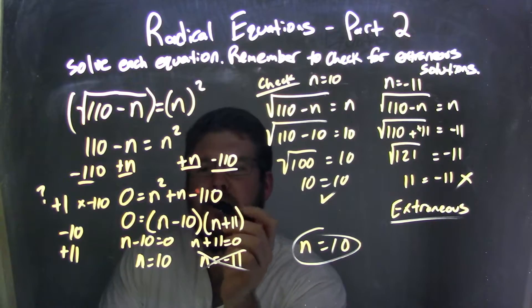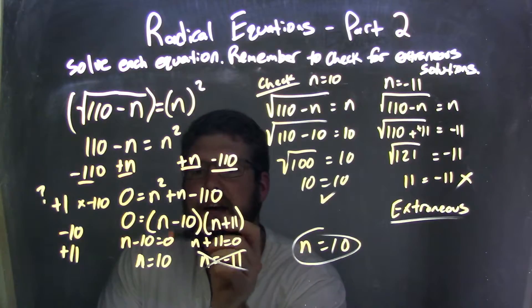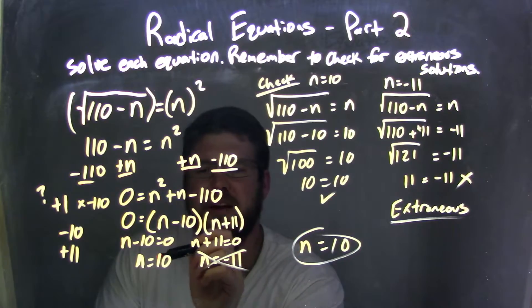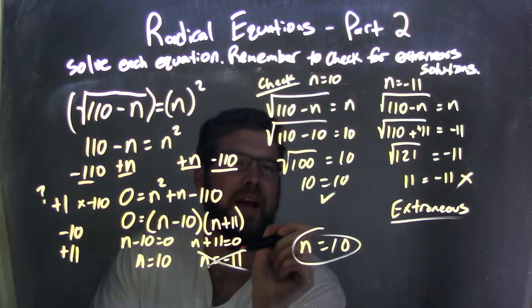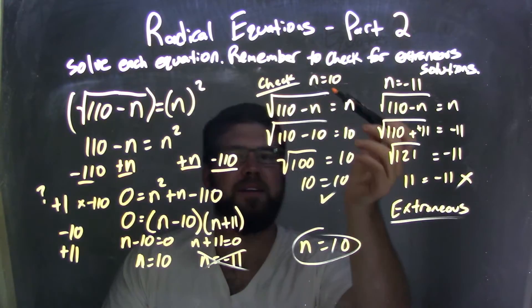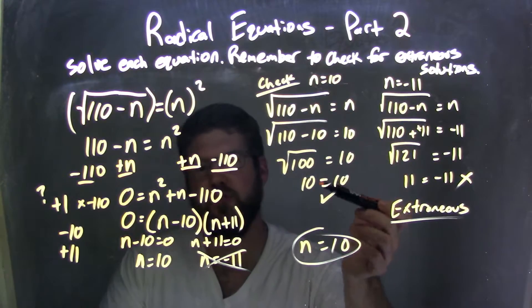Then from there, I factored to get n minus 10 times n plus 11, then set both equal to zero to get our two values of n equals 10 and n equals negative 11. I checked both of our answers, the first one I checked, and when I plugged it back in, it became a true statement.